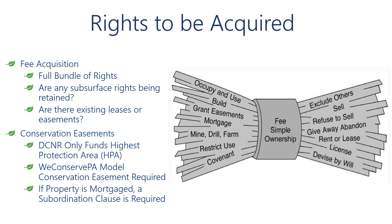For conservation easements there are a few important details to keep in mind. DCNR will only fund the highest protection area of a conservation easement. Applicants will need to upload a map that clearly defines the proposed protection areas as defined in the We Can Serve PA model conservation easement, including the proposed acreage of each of the three protection areas. Applicants must use the most recent We Can Serve PA model conservation easement or a conservation easement template pre-approved by DCNR. If there is a current mortgage on the property to be eased, a subordination clause from the lien holder will be required. For both fee acquisitions and conservation easements, detail all existing leases, easements, and right-of-ways that currently exist on the property.